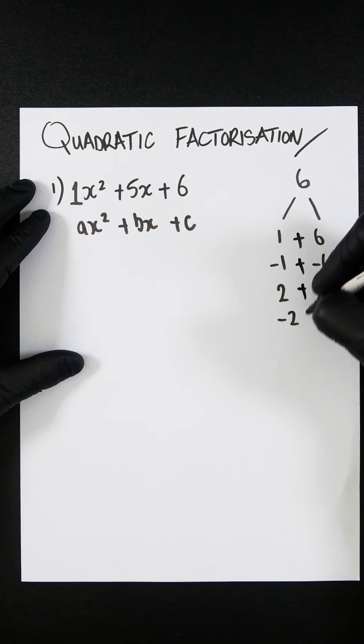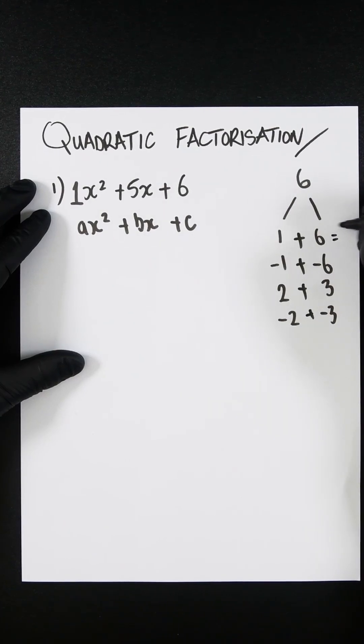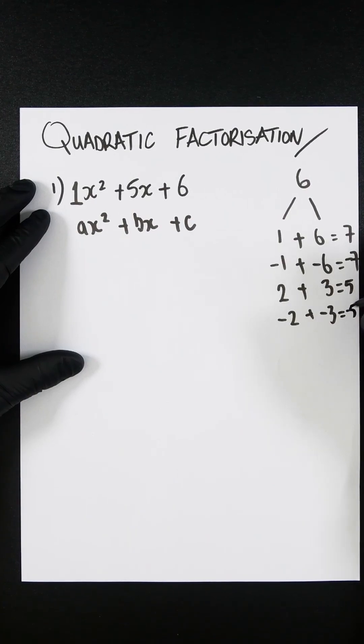Put a plus sign in between everything and then add them up. So 1 + 6 = 7, -1 + -6 = -7, 2 + 3 = 5, and -2 + -3 = -5.